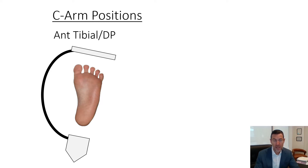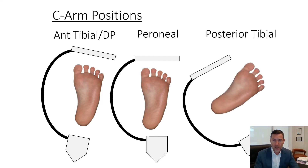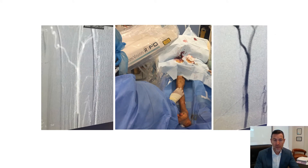The position for the anterior tibial is completely parallel with the lower extremity to splay the bones. The peroneal requires a slight ipsilateral oblique angle to skirt the fibula. The posterior tibial is best done with the C-arm at a completely perpendicular angle to the lower extremity. Here you can see puncture of the proximal third of the anterior tibial artery in a straight segment, with the C-arm parallel to splay the tibia and fibula.